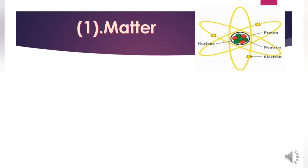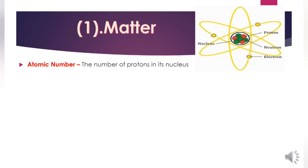The first category is about matter. Matter contains atoms and molecules. An atom is the simplest particle that can participate in a chemical reaction. All atoms consist of a central nucleus surrounded by one or more orbital electrons. The nucleus always contains protons.